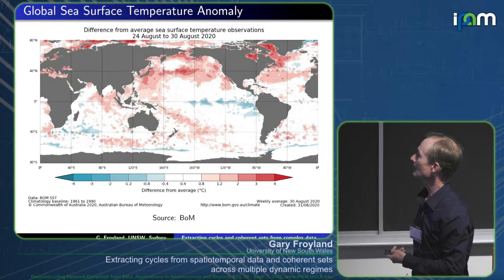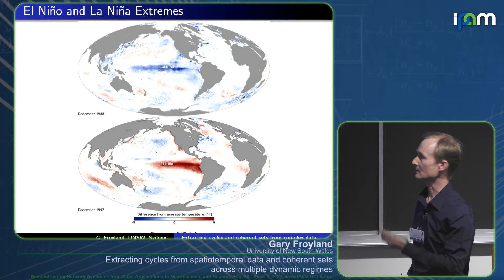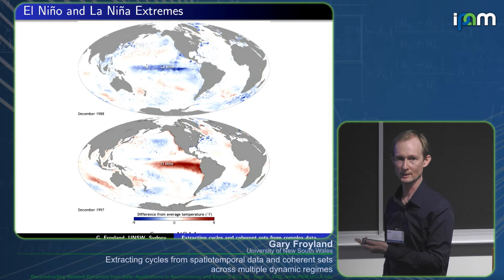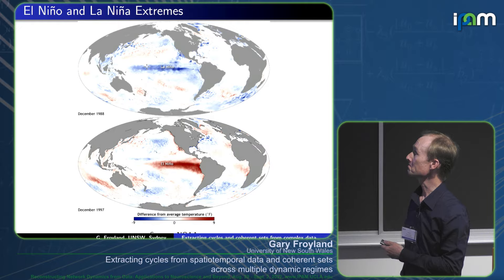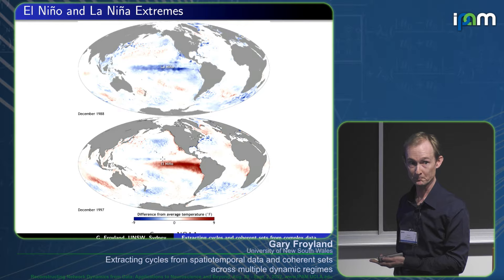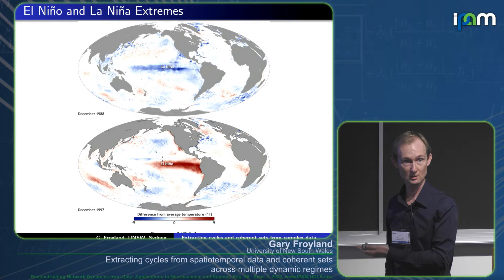ENSO — the El Niño Southern Oscillation — is an approximate oscillation between two extremes. At one extreme you have a cooler tongue of water in the Indo-Pacific on the surface; for Australia's east coast that means cooler, wetter conditions. We've had quite a few severe floods, and La Niña has had a big impact on those. At the other extreme, warm surface water is indicative of El Niño — warmer, drier conditions, and if El Niño is strong, drought.